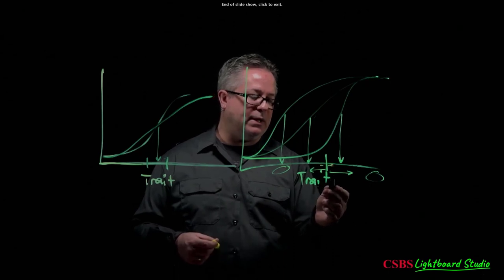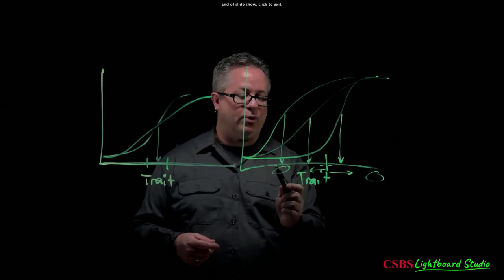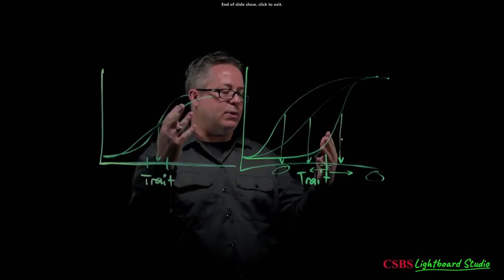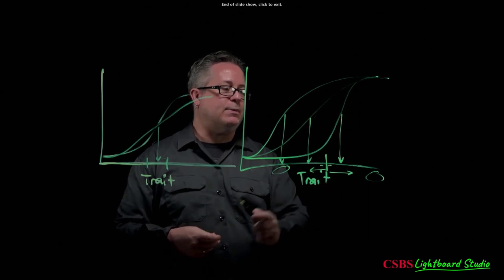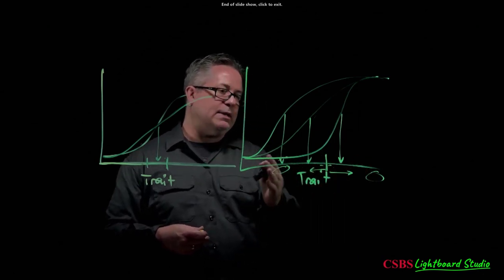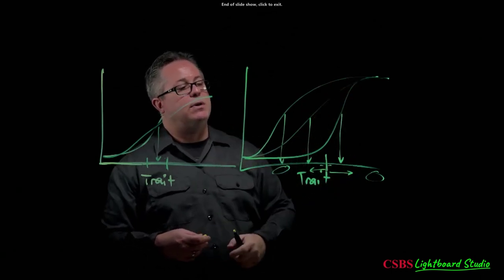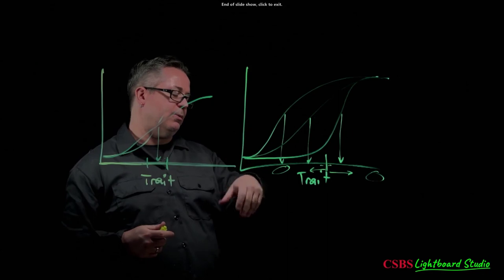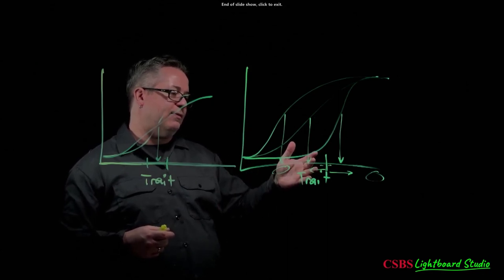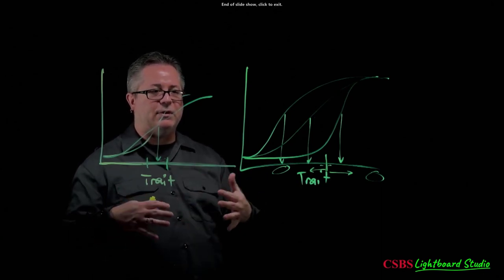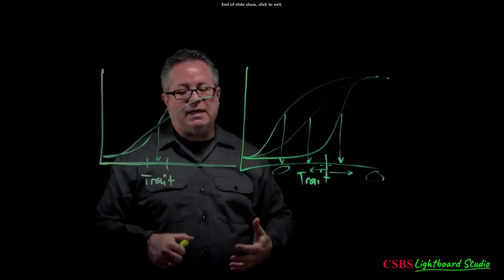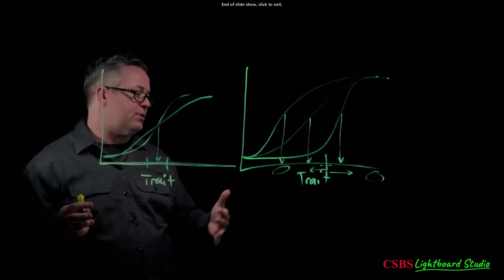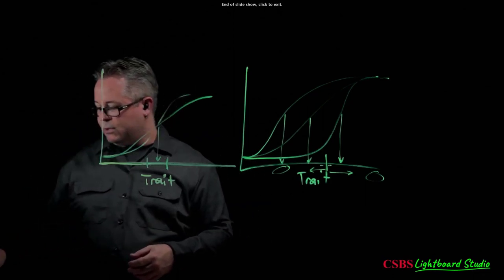If items only tell apart clearly depressed from clearly not-depressed people, those in the borderline range will be misclassified. You can't tell them apart around the cutoff because the items don't discriminate finely at that level. You want to vary difficulty while maintaining discriminability so you can actually separate people across the full trait range and make confident decisions around clinical cutoff points.